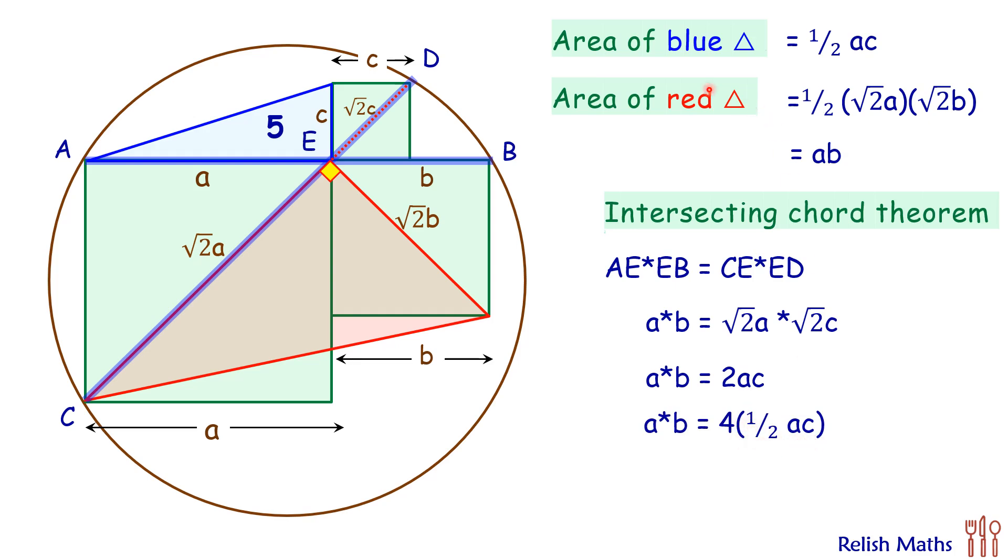Half ac is the area of blue triangle that is 5 cm square, so ab is area of red triangle. We can say area of red triangle is 4 times 5 that is 20 cm square and that's our answer.